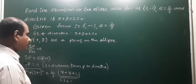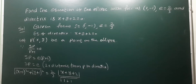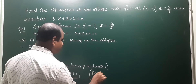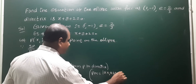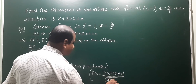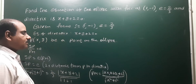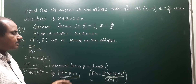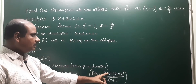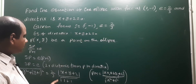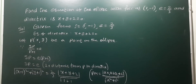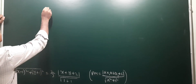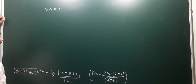So PM = |x + y + 2| / √(1 + 1) = |x + y + 2| / √2. Now squaring both sides, the square root cancels out. Left side: (x - 1)² + (y + 1)². Right side: (2/3)² × (x + y + 2)² / 2.